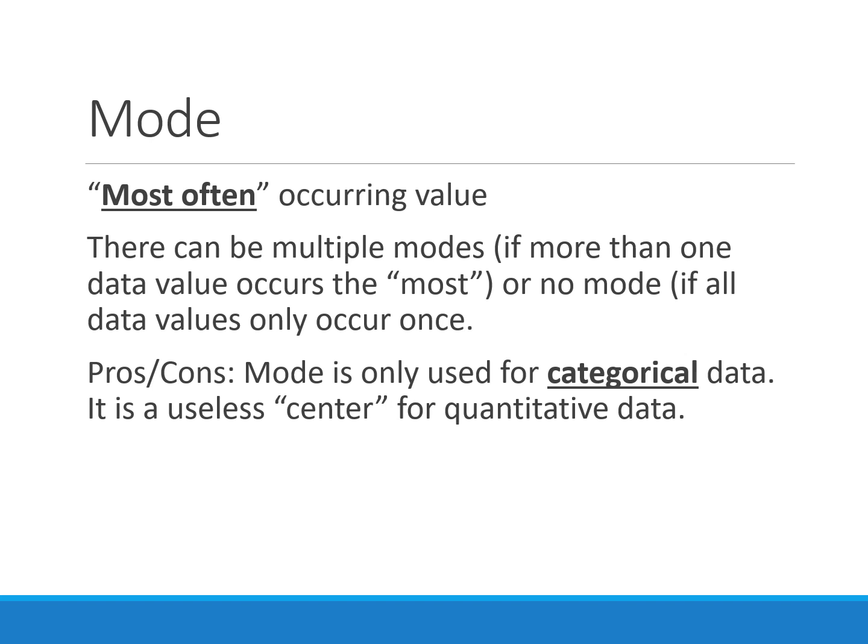The mode is another measure of center — it's the most often occurring value. There can be multiple modes, or no mode at all if no number appears more than once. Mode is for categorical data only; we don't use mode for quantitative data. We might reference it in our answer, but it's not used as a measure of center.